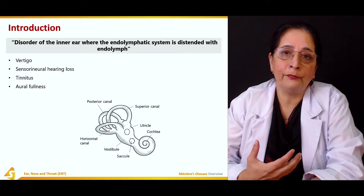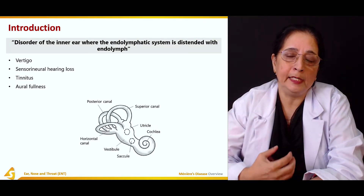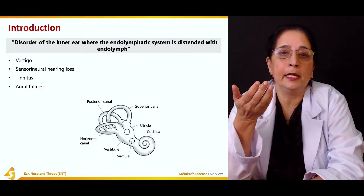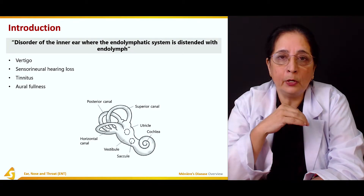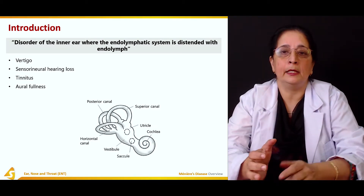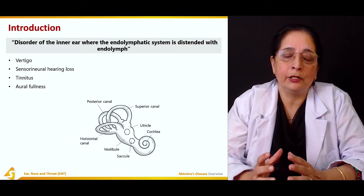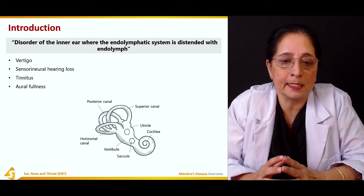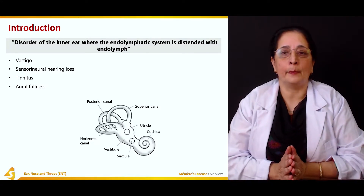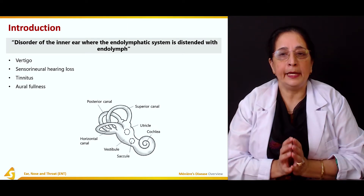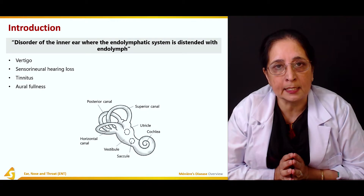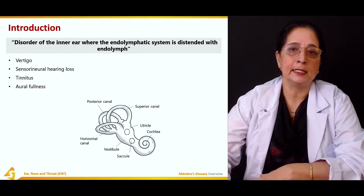Another symptom is tinnitus — the patient has a ringing sensation in the ear. This ringing sound can cause sleep disturbances; patients cannot sleep and keep changing positions trying to feel better. There is also aural fullness — the patient feels fullness in the ear, again because of the increased endolymph, which causes that feeling of fullness. So the four main symptoms of Meniere's disease are: vertigo, sensorineural hearing loss, tinnitus, and aural fullness.